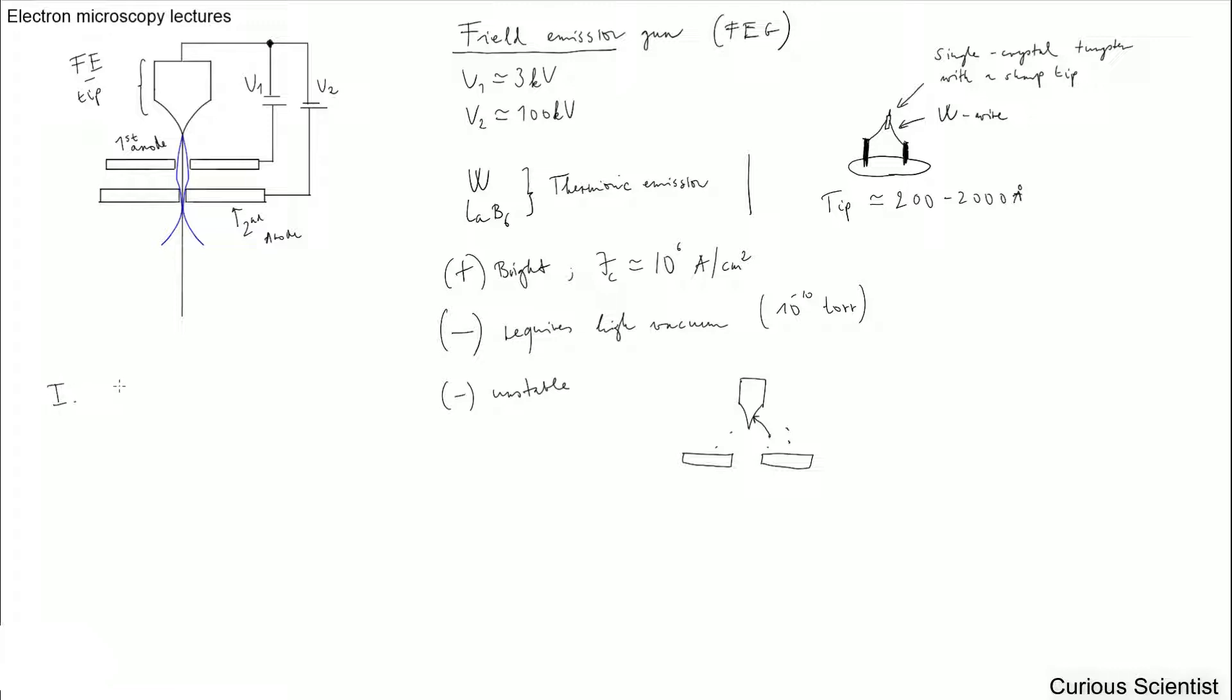And there are two types of this kind of FEG guns. So there is type 1, that is the cold cathode type. So that is basically the thing that I was drawing here on the upper right corner. So we have a single crystal tungsten tip with that radius, 200 to 2,000 Å. And then this is not assisted by any thermal process.